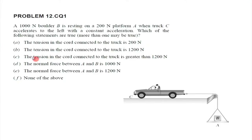Only way this assembly can accelerate upwards is if this tension exerts a force over and above 1200. So the tension has to be necessarily more than 1200 for the entire assembly to go upwards. Therefore, we can clearly say that the tension in the cord connected to the truck cannot be 1200 — it has to be greater than 1200. That is the correct answer, based on the logic we just discussed.